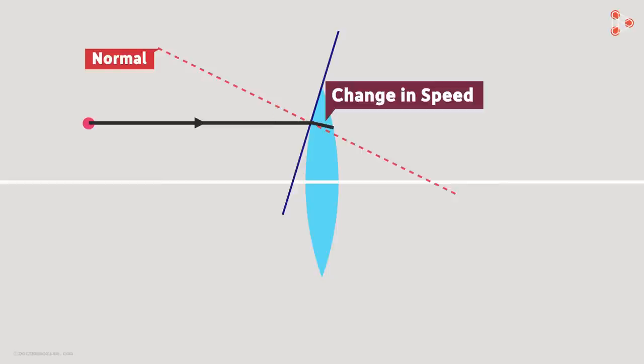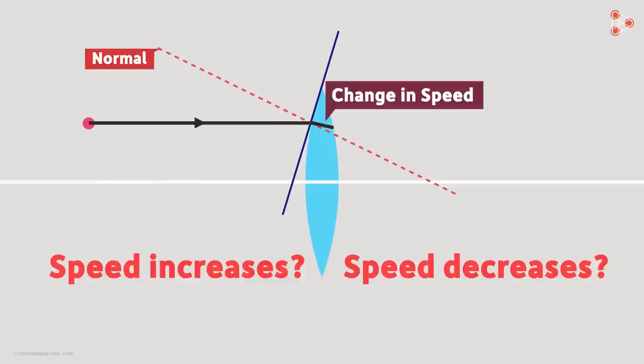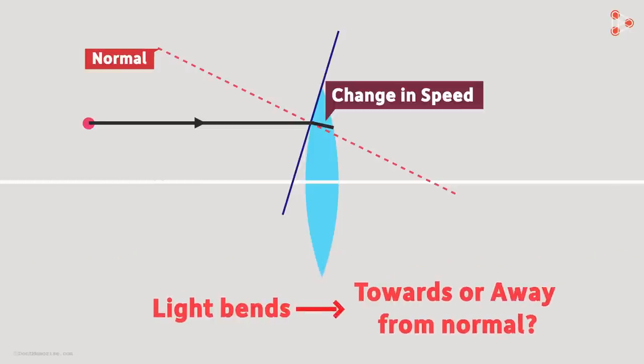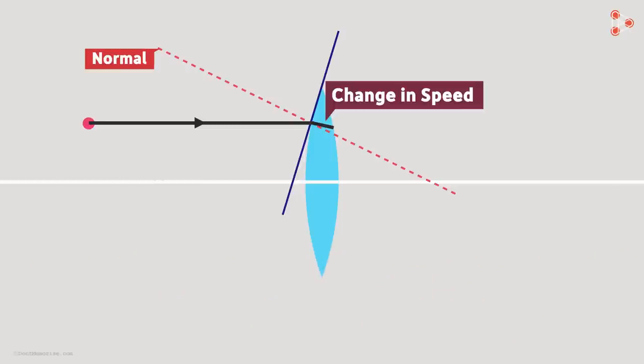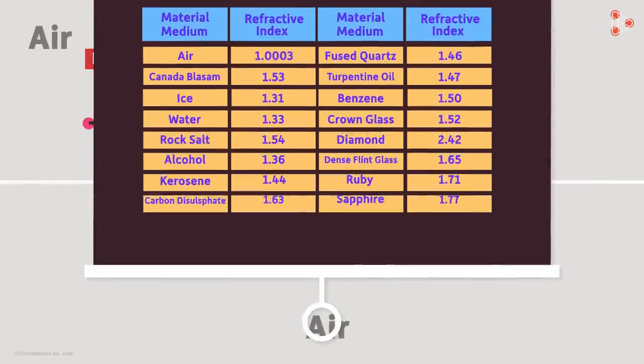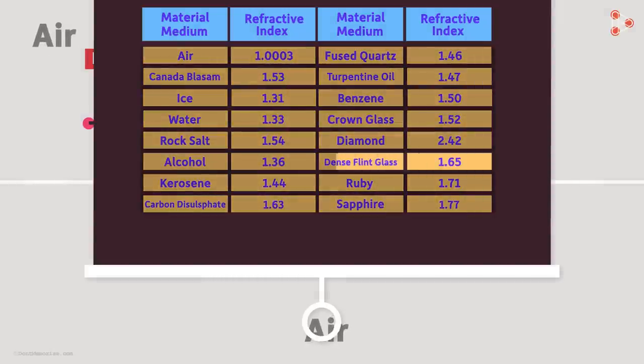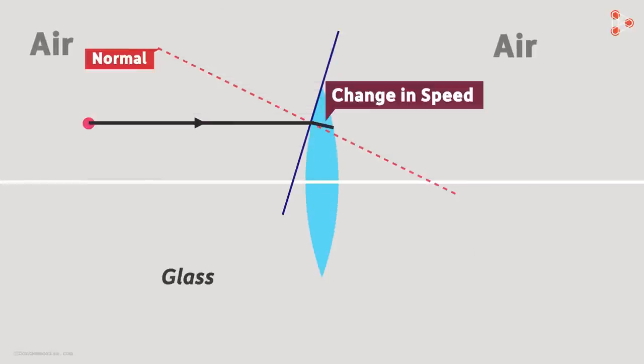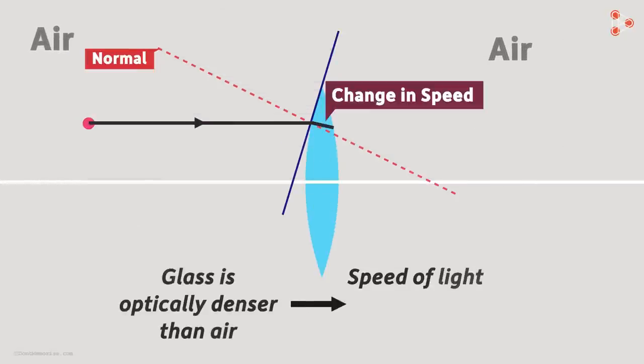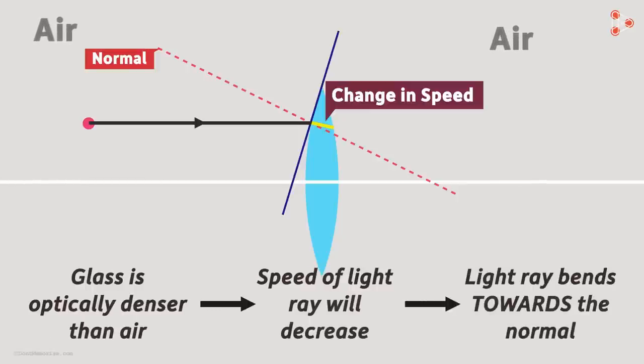Will the speed inside the lens increase or decrease, and where will the light bend? Well, that will depend on the incident medium. Suppose this medium is air. From this table, we can see that the refractive index of glass is much greater than air. This means that glass is optically denser than air. Hence the speed of the ray of light will decrease in glass, and because of that it will bend towards the normal.